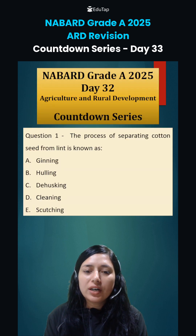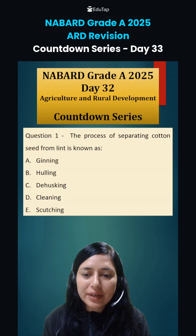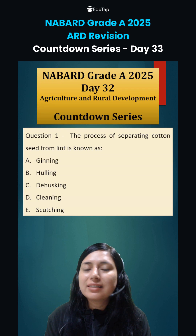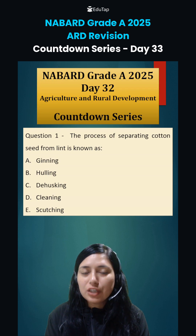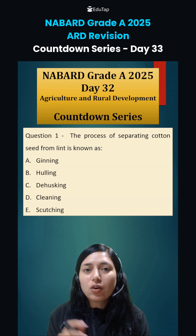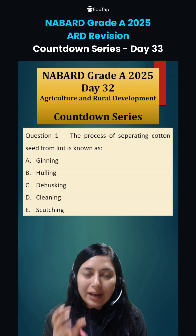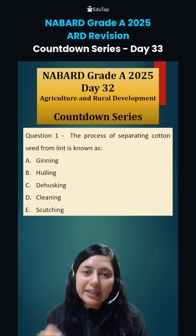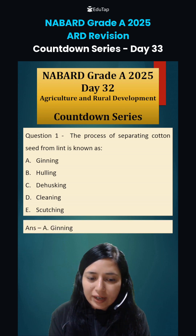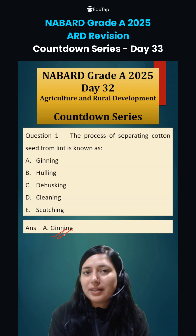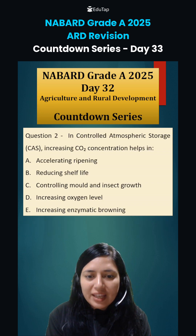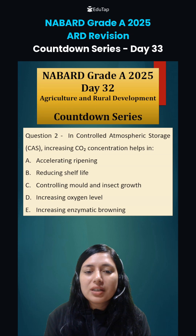The first question was about Day 32: the process of separating cotton seed from lint is known as. Students, this process where cotton fiber is separated from seed is called ginning. You have to remember this — it is called ginning.